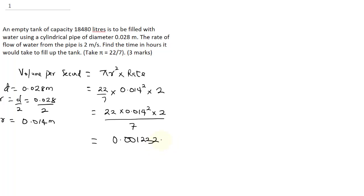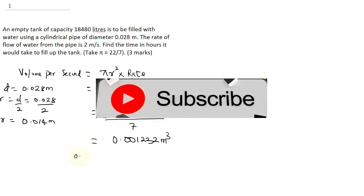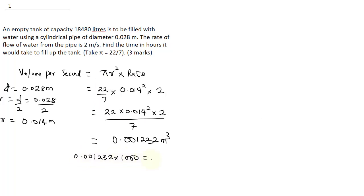The unit is meter cubed. Now you need to find it in liters, so to get it in liters you do 0.001232 multiplied by 1,000, and that gives you 1.232 liters. Having established this, the question says we should find the time in hours it will take to fill up the tank. To get our time, our time is now going to be 18,480 divided by 1.232.